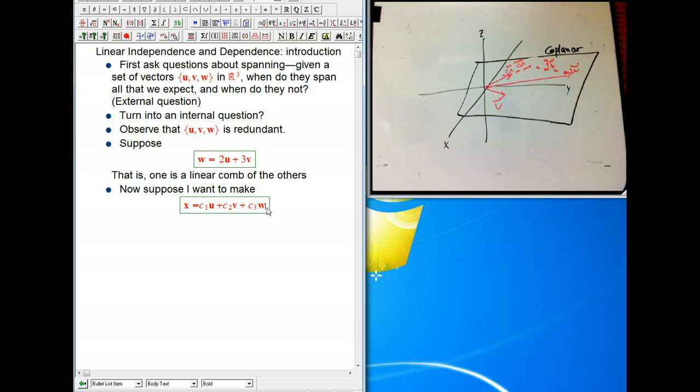So suppose I want to make this other vector x as a combination of these three. Well do I really need the w here? Whatever I can make as a combination of u and v and w, I can make as a combination of just u and v, because this guy is a combination of the other two. So here, w was redundant.